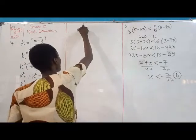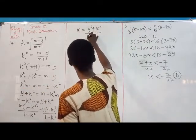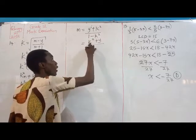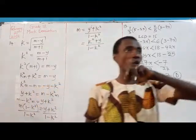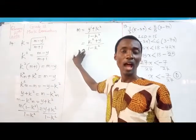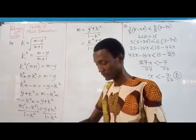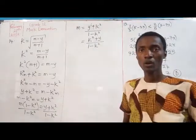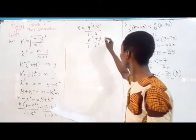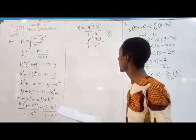Factoring out m: m(1 - k²) = y + k². Dividing both sides by (1 - k²) gives m = (y + k²)/(1 - k²). The answer is option B. Be very careful with negative signs when solving mathematical problems.